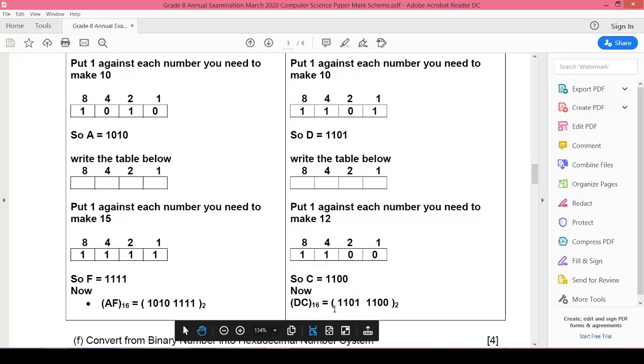As binary equivalent, you will write the code for D on the left side and you will write the code for C on the right side. It means all of this, 1101 and 1100, is the code for DC16.